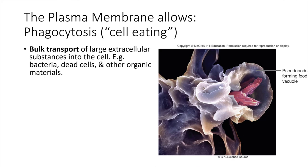A good example of this is some of the cells of our immune system, like macrophages. What they do is they go around in the body and they keep an eye out for bacteria or dead cells or other things that are not supposed to be there. And when they find things like that, they take it inside and they digest it.